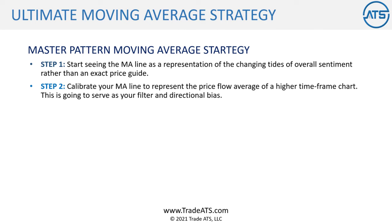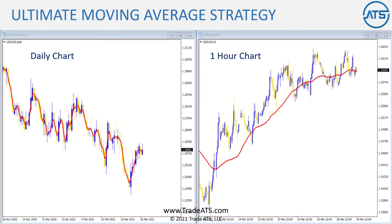Step number two is to calibrate your moving average line to represent the price flow average of a higher time frame chart — this serves as your filter and directional bias. In this example with USD/CAD, I have a daily chart on the left and a one-hour chart on the right. You want to use a moving average to represent the average price flow of two candles of your higher time frame. Since there are 24 one-hour candles in a day, multiplied by two, you'd use a 48-period moving average when trading the one-hour chart into the daily.